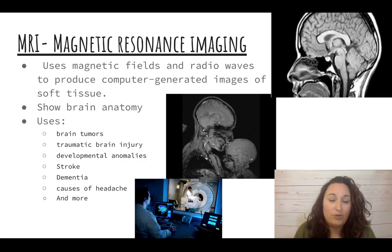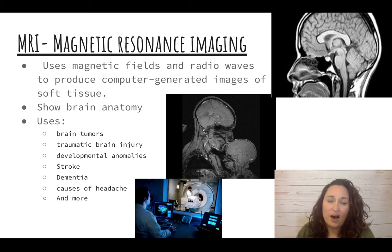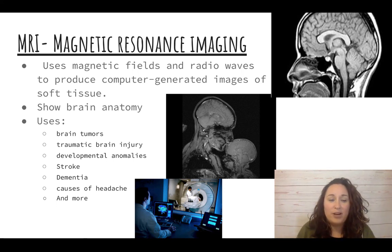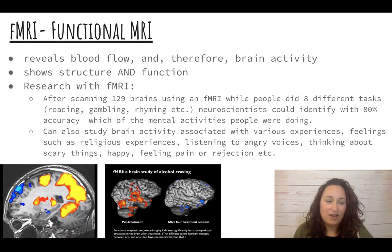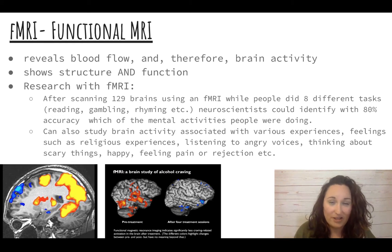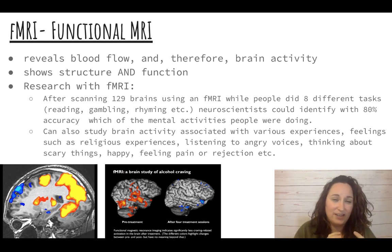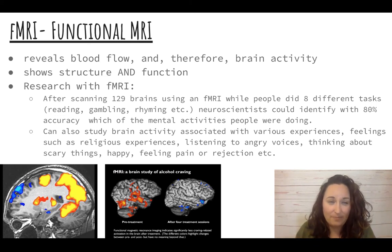An MRI can show you soft tissue — it uses magnetic fields and radio waves to show you soft tissue. Something like a brain injury, brain tumors, any sort of structural damage can be shown through an MRI. An fMRI takes that same soft tissue structure image but also gives you the function part like the PET does. So the fMRI is kind of a two-in-one of the PET and the MRI. It shows us blood flow, and that blood flow indicates where brain activity is happening.